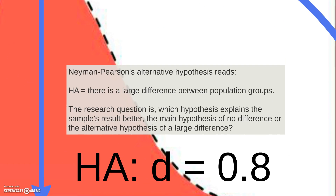Neyman-Pearson's alternative hypothesis reads, for example, as: there is a large difference between population groups, and this large difference is specific — for example, a Cohen's d of 0.8, the standardized difference. So, the research question here comes down to: which hypothesis explains the sample's research better — the main hypothesis of no difference, or the alternative hypothesis of this specific large difference?